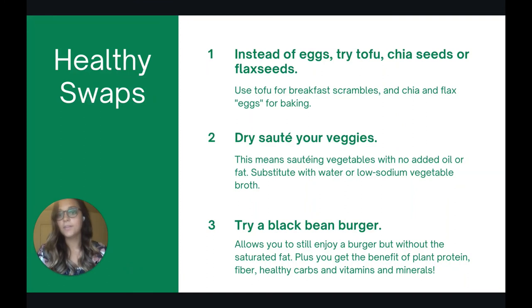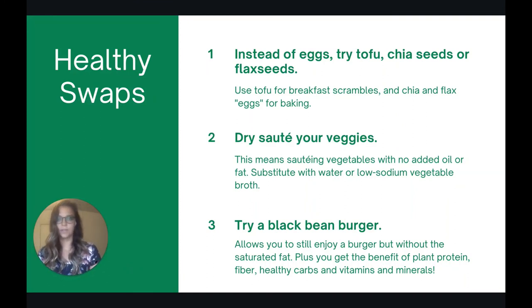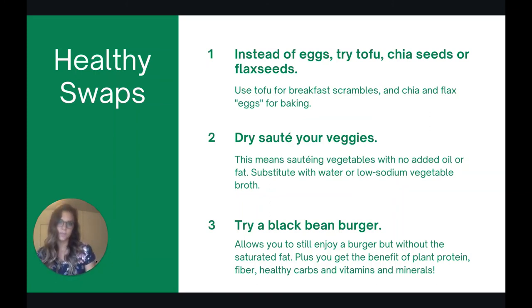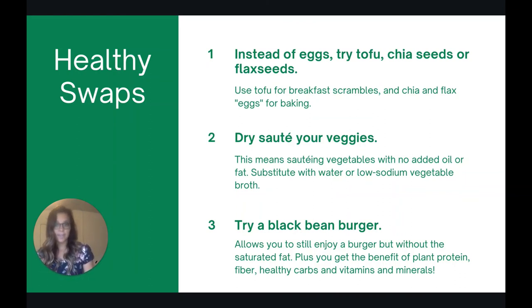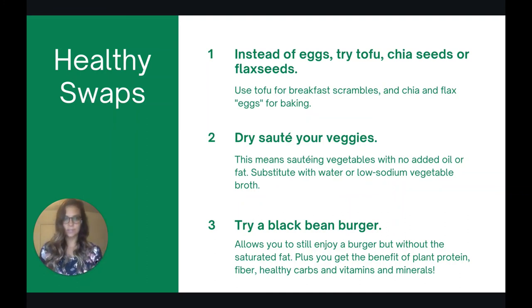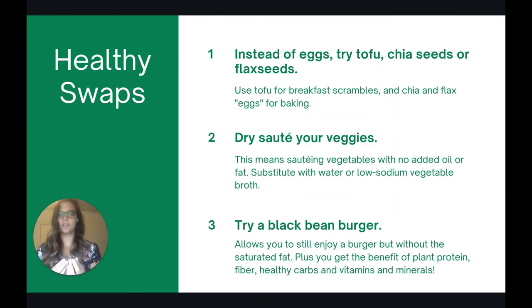Now let's talk about some healthy swaps to decrease the amount of fat you're consuming. If you're using eggs, try some substitutes. If you're making a breakfast scramble, try using tofu instead. You can also substitute eggs when baking by using a chia egg or a flax egg — just mix one tablespoon of the seeds with two and a half tablespoons of water, mix it together, and it creates a texture similar to cracking an egg into whatever you're baking.